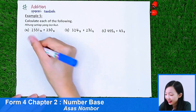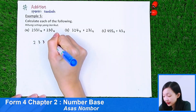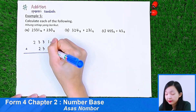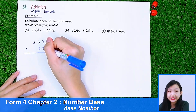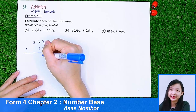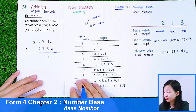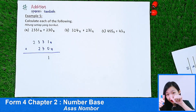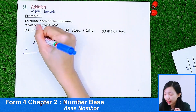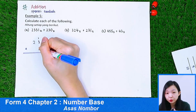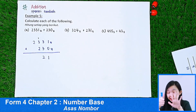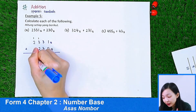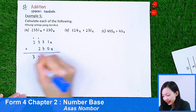Now let us go to the addition part. 2, 3, 3, 1 in base 4 plus 2, 3, 0 in base 4. Starting from the right: 1 plus 0 is 1. Then 3 plus 3 is 6 — but we cannot write 6, because the highest digit for base 4 is 3. So we subtract 4, leaving 2, and carry 1. Then 1 plus 3 plus 2 is 6 — again subtract 4, leaving 2, carry 1. Then 1 plus 2 is 3 — we can write 3. So this is our final answer.